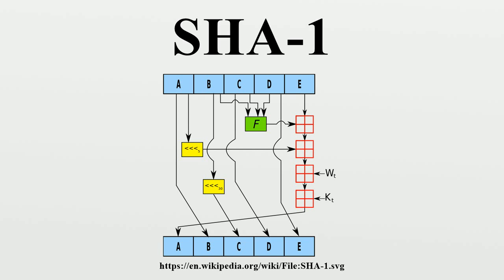Cameron McDonald, Philip Hawkes and Joseph Pieprzyk presented a hash collision attack with claimed complexity 2^52 at the rump session of EuroCrypt 2009. However, the accompanying paper, "Differential path for SHA-1 with complexity O," was withdrawn due to the authors' discovery that their estimate was incorrect. One attack against SHA-1 is Mark Stevens' with an estimated cost of $2.77 million to break a single hash value by renting CPU power from cloud servers. Stevens developed this attack in a project called HashClash, implementing a differential path attack. On 8 November 2010, he claimed he had a fully working near-collision attack against full SHA-1 with an estimated complexity equivalent to 2^57.5 SHA-1 compressions, and estimated this attack can be extended to a full collision with a complexity around 2^61.